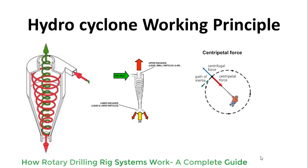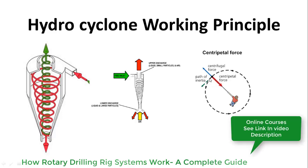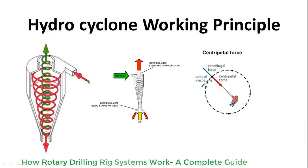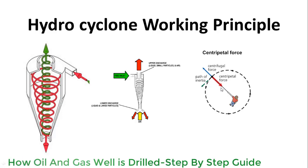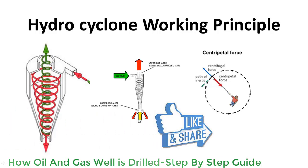Hydrocyclone working principle: hydrocyclones work on the basis of centrifugal force. If we rotate an object with the help of a rope in a circular motion, there are two forces acting on it. One is centripetal force, which tends to pull the body toward the axis of rotation, whereas the other is centrifugal force, acting opposite to centripetal force and trying to pull the body away from the axis of rotation.